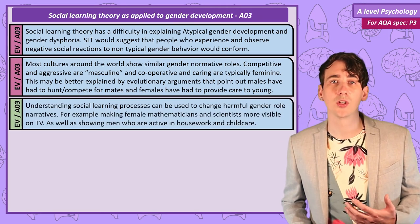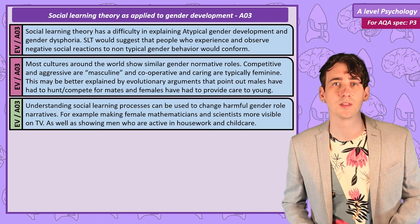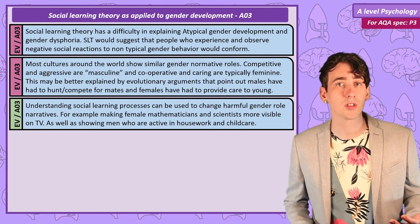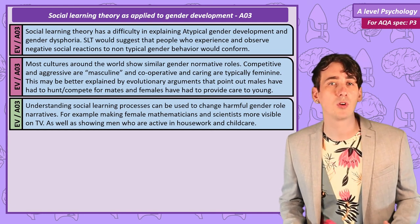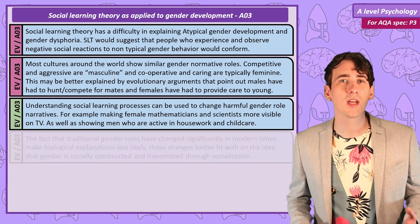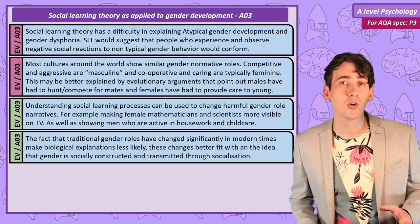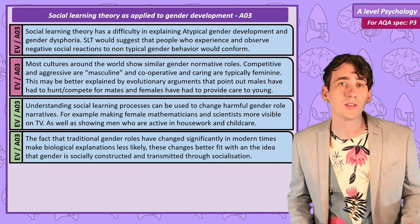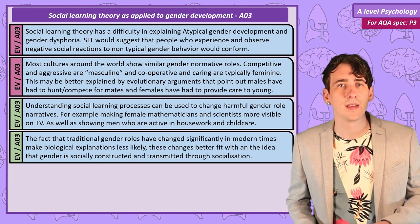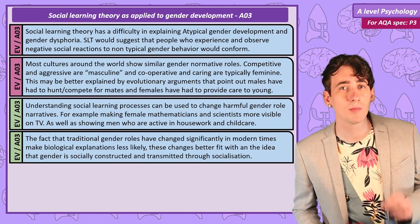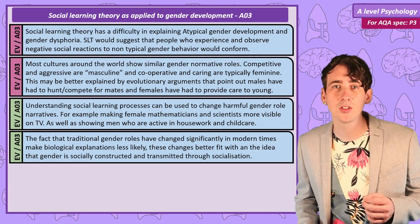Psychological understanding of how social learning processes can reinforce harmful gender narratives can lead to interventions — for example, making visible in the media positive role models of female mathematicians and scientists, as well as caring males who take an active role in childcare and housework. Gender roles in modern culture are becoming less strict — for example, the use of gender-neutral toys, encouragement of girls into STEM, and children's movies by Disney now showing women as far more empowered. The fact that culture's gender roles can change so dramatically within a generation suggests that gender is socially constructed and transmitted through socialisation, not biology.